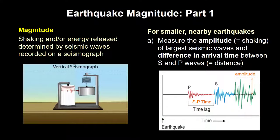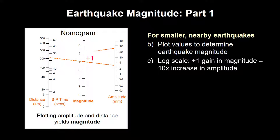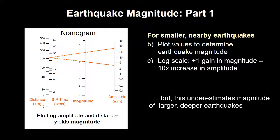Charles Richter developed one of the first consistent ways to measure earthquakes in California by analyzing the amplitude and time interval between the arrival of P and S waves. Geologists applying Richter's methods would use a chart like this to plot amplitude and distance values to determine earthquake magnitude. Amplitude is plotted on a log scale, so that each step in magnitude is equivalent to a ten-fold increase in amplitude. This method gives an accurate magnitude value for smaller, local earthquakes that occurred at shallow depths. However, as more data were collected, it became clear that it didn't accurately measure the size of larger, deeper earthquakes occurring on longer faults.